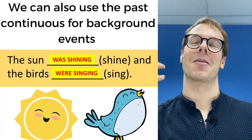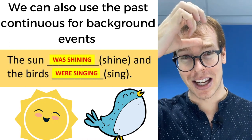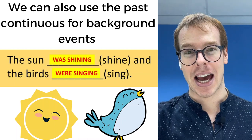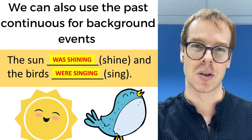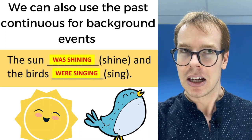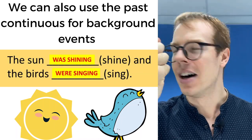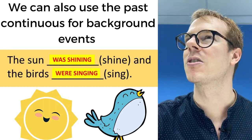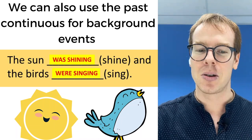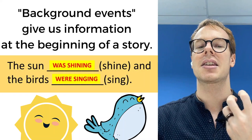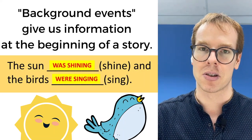Whenever we're talking about past events in a story, something like that, we need to sometimes add background information. For example, at the beginning of the story, I want to tell you exactly what I experienced. So I'll say: the sun was shining, the birds were singing, I was living the dream. That's using ING to give us a nice amount of background information about the story.